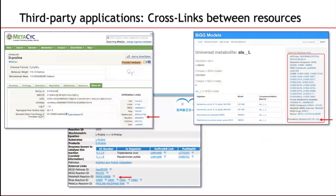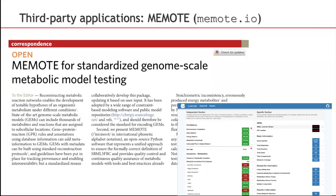MetaNetics MNXRef has a few examples of third-party applications. First, the cross-links between the different resources are now exposed in more and more third-party websites. Another application is the MNXRef tool, which is a program for standardizing genome-scale metabolic models into which MetaNetics MNXRef plays an important role. Other applications include the formulation of new genome-scale metabolic networks, applications in synthetic biology — typically in the design and engineering of new biochemical pathways — and the thermodynamics of metabolism, which is of growing interest.